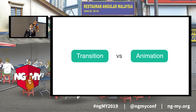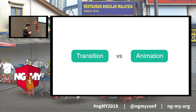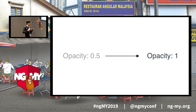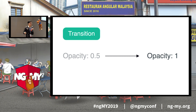The backbone of CSS animations are two CSS properties: transition and animation. Whenever you want to move a CSS property from one value to another smoothly, that's when you use CSS transitions.